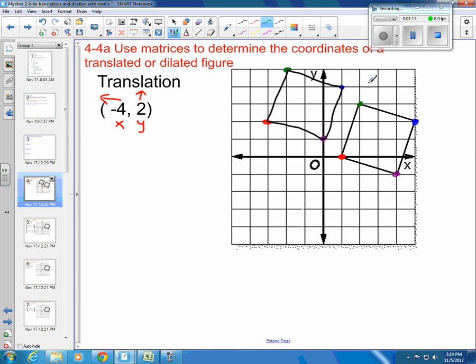This point is at (2, 3), and its new point is going to be (-2, 5). So what I did is I took my x coordinate and I subtracted 4, and I took my y coordinate and I added 2.